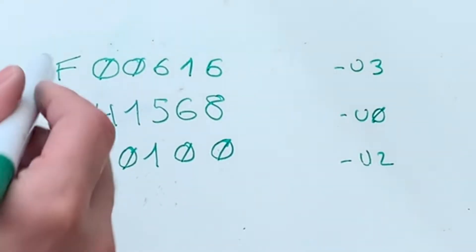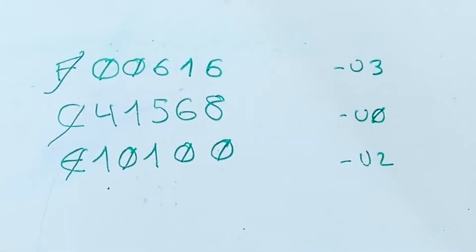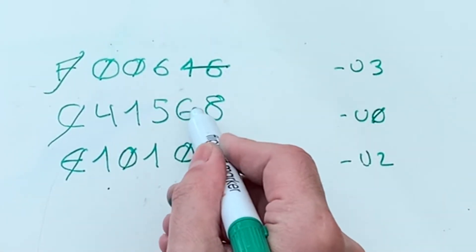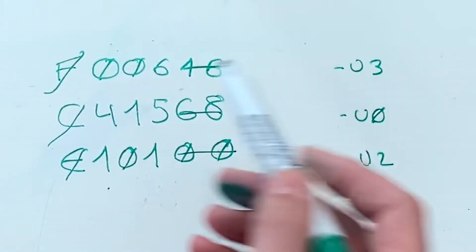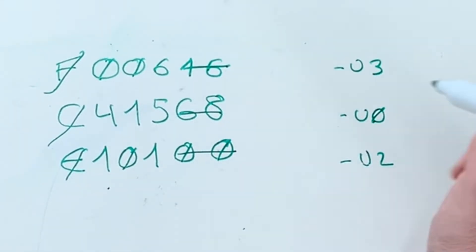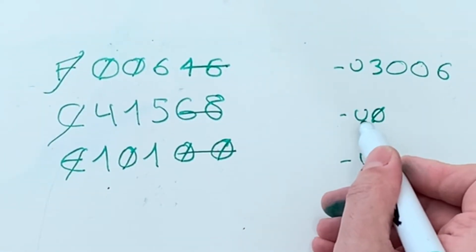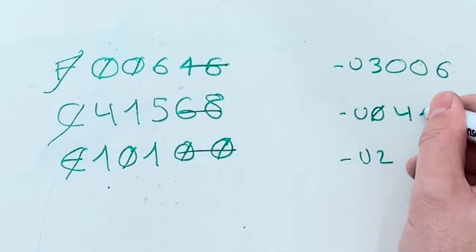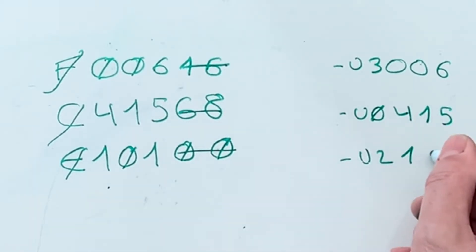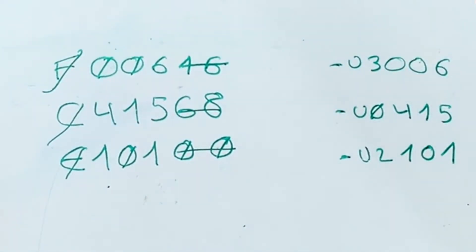To convert it, you just replace the first letter with its OBD equivalent and also remove the last two digits of each code. So the first code will become U3006, the second will become U0415, and the third will become U2101. And these are the correct codes in the OBD language.